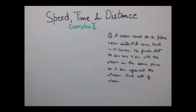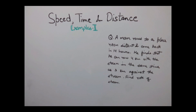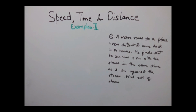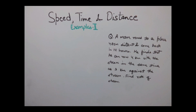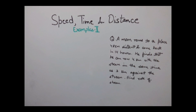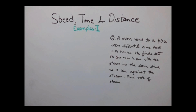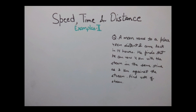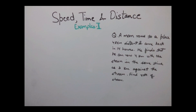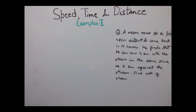The first example is: a man rows to a place 48 km distant and comes back in 14 hours. He finds that he can row 4 km with the stream in the same time as 3 km against the stream. Find the rate of the stream.